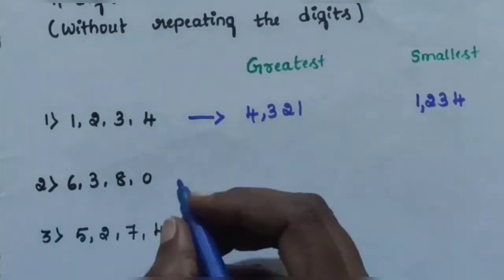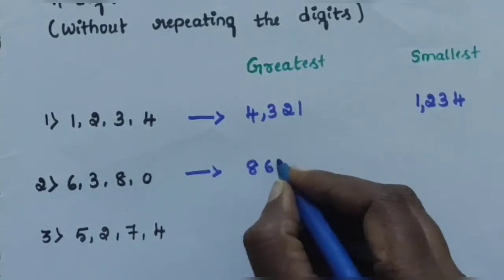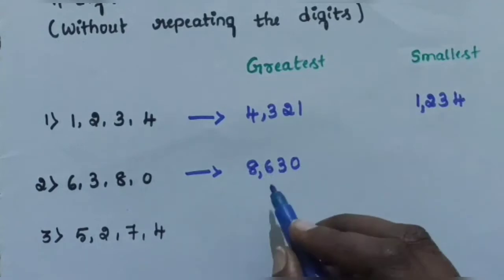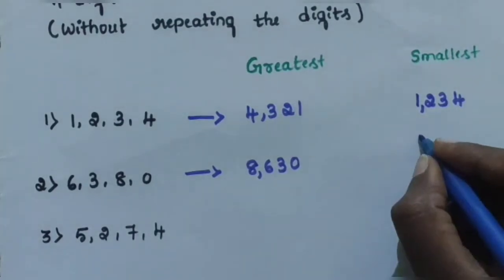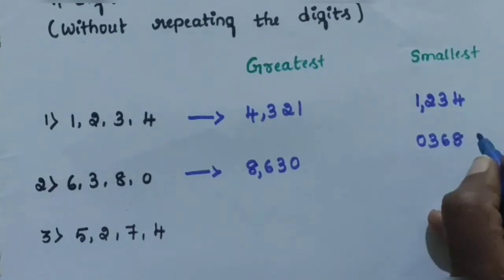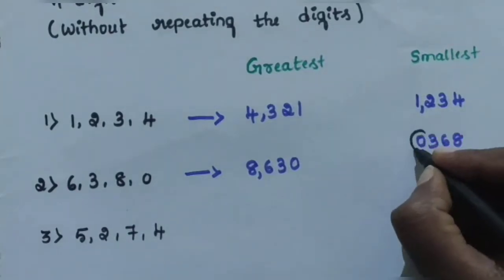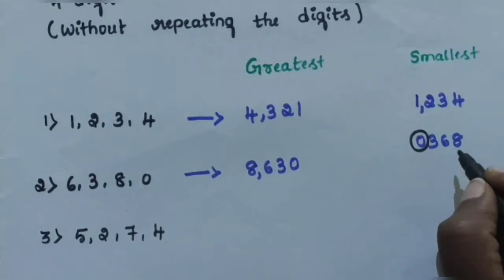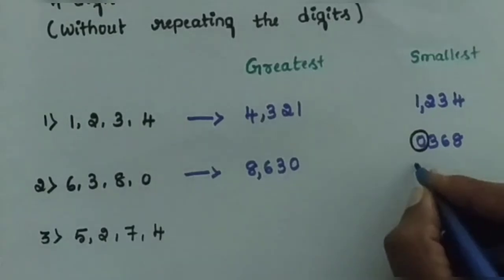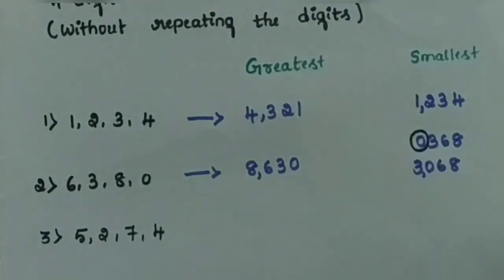Question number 2: using the digits 8, 6, 3, 0. The greatest number is 8,630. For the smallest number, 0 has no value on the left side, so 0 cannot be the leading digit. Therefore, the next number 3 comes first, giving 3,068 as the smallest number.